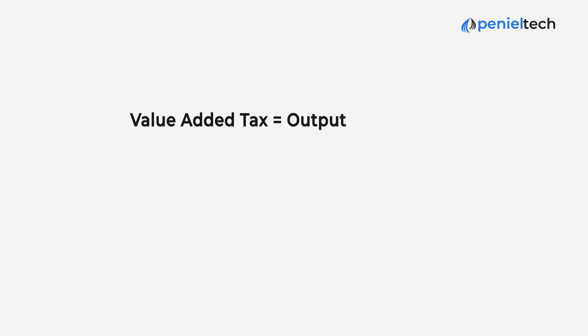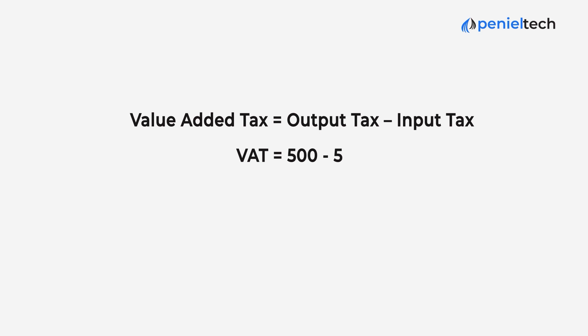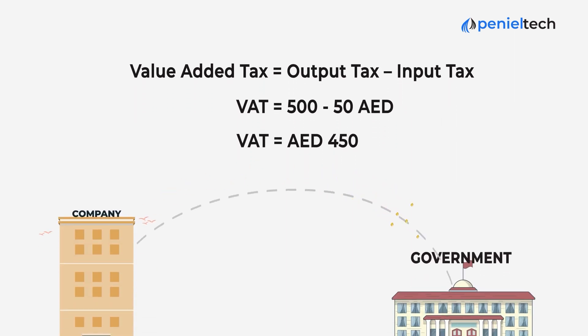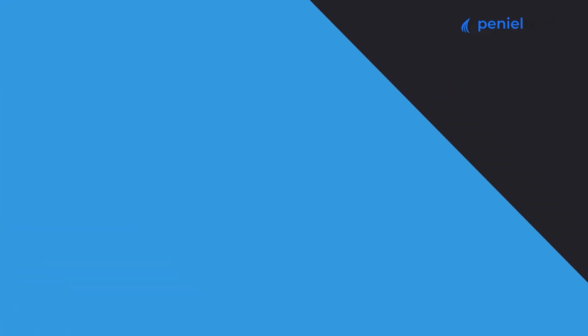Which means value-added tax equals output tax minus input tax, which is equal to 500 dirhams minus 50 dirhams, equal to 450 dirhams as the VAT amount. And this amount is payable by the company to the government.